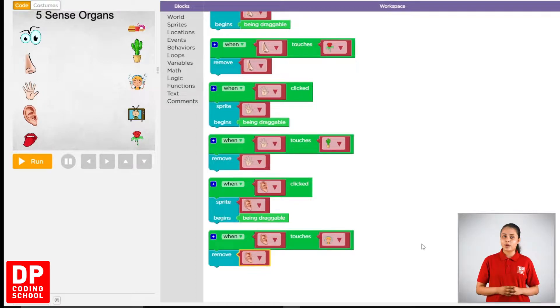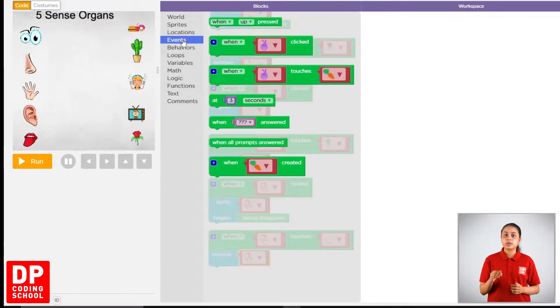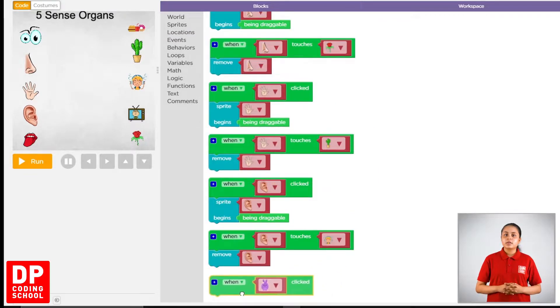First, we click events. Then, when clicked block, we drag that button. If you click the button, click the button button.